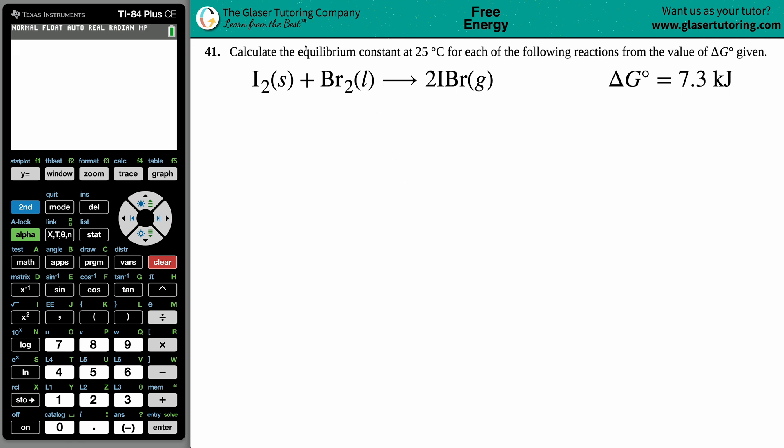Number 41: Calculate the equilibrium constant at 25 degrees Celsius for each of the following reactions from the value of the delta G naught given. We have I₂ solid plus Br₂ liquid yields 2IBr gas with the delta G of 7.3 kilojoules at 25 degrees Celsius. Now we want to find that equilibrium constant, and remember an equilibrium constant is K.